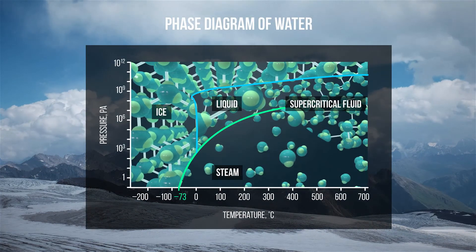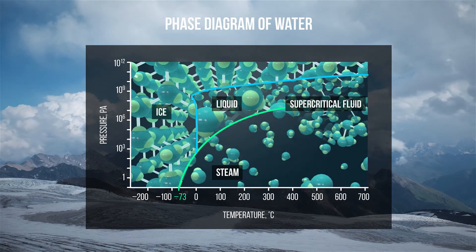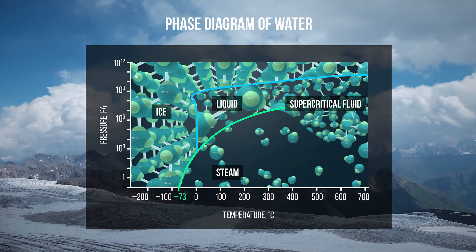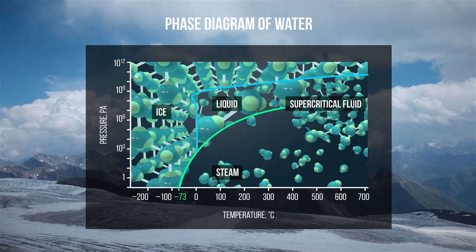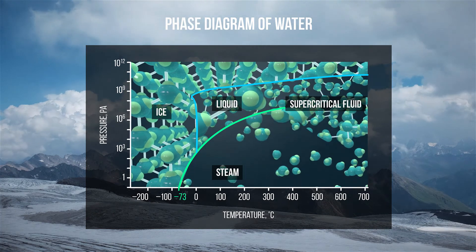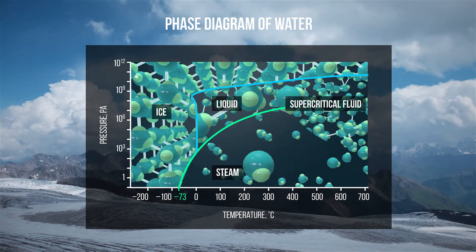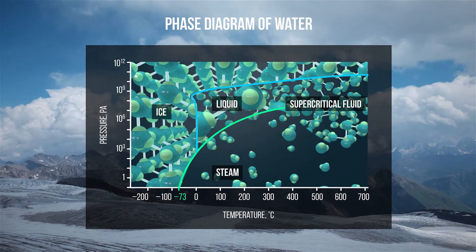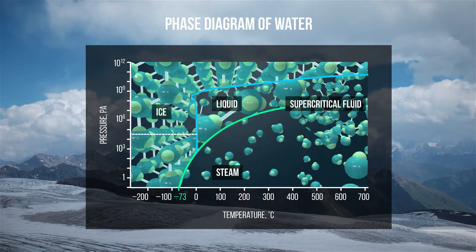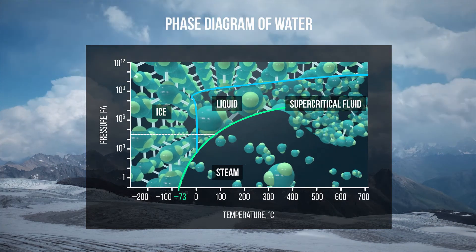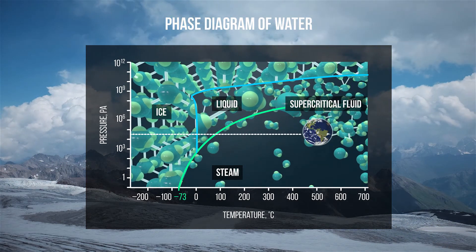The dependence of the state of matter on pressure and temperature is usually illustrated by graphs called phase diagrams. The phase diagram of water shows that at the atmospheric pressure typical at the surface of the Earth, we can first melt the ice and turn it into a liquid, and then heat the liquid to its boiling point and turn it into steam.